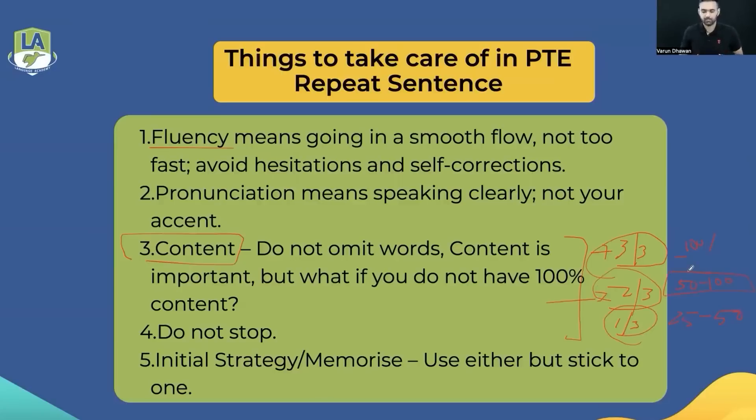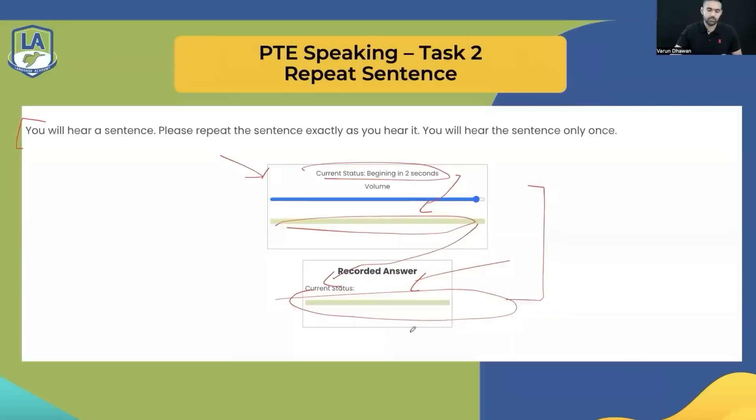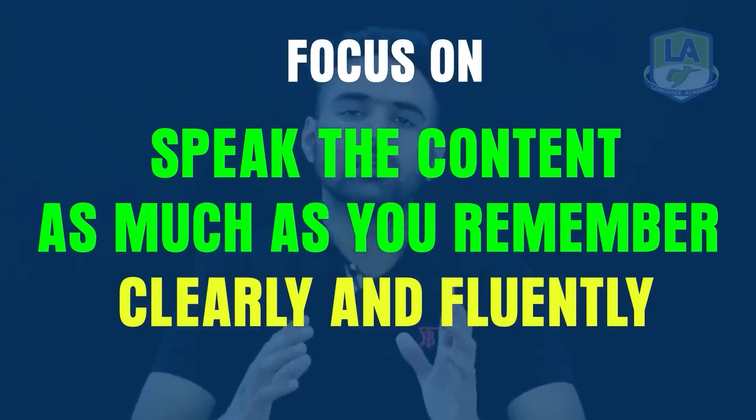बहुत बार students बताते हैं कि exam दिया, नब्बे आया listening में, लेकिन हमेशा 2-3-4 repeat sentences गड़बड़ होते हैं। गड़बड़ का मतलब क्या है — देखो, अगर आपको एक sentence इतना याद है 'I am going to London with my friends' — नहीं याद, तो दो options हैं। Normally बच्चे क्या करते हैं, ऐसे बोलते हैं: 'I am going to London... friends.' इस checker में क्या है — time होता नहीं है, आपके पास सिर्फ 8 seconds हैं अपना answer देने के लिए।